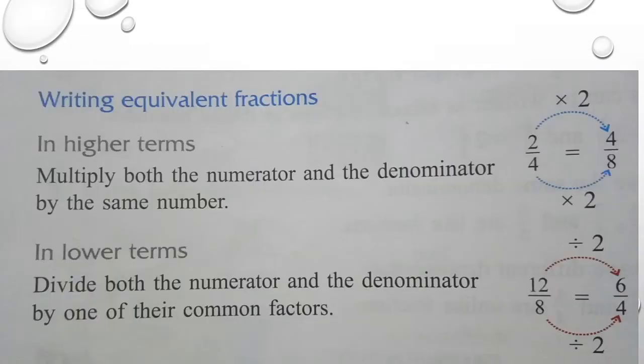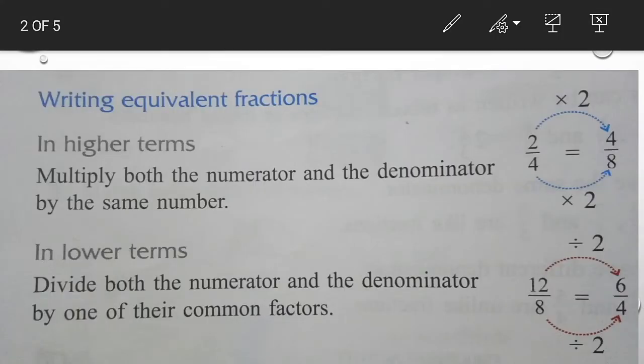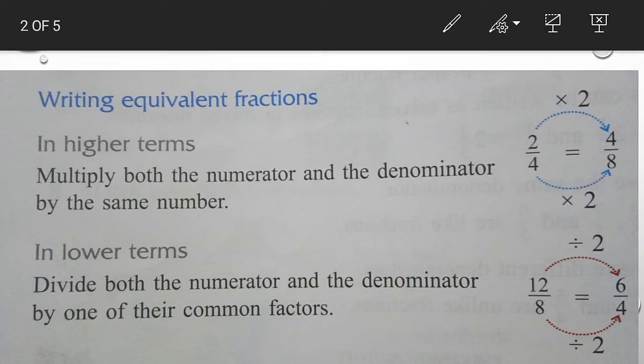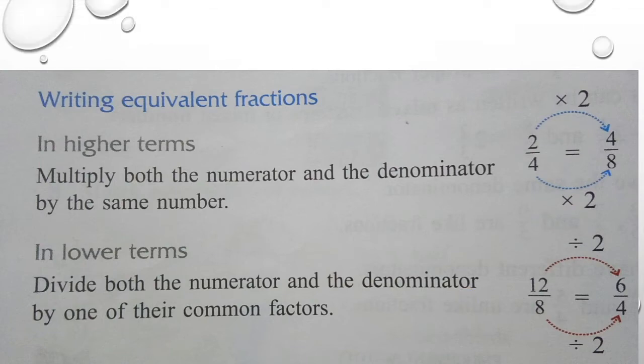So 12 divided by 2 is what? 6. And 8 divided by 2 is what? 4. So this is lower term and this is higher term. If we convert the fraction to higher term, then we multiply. And if we convert to lower term, then we divide.